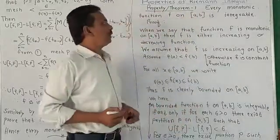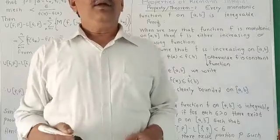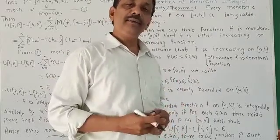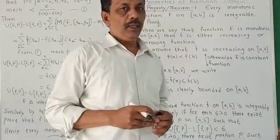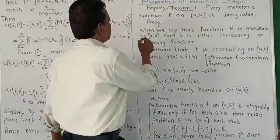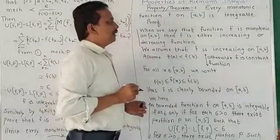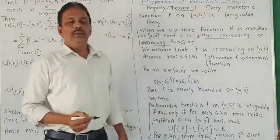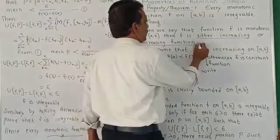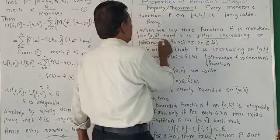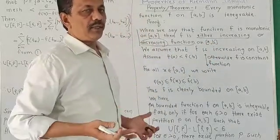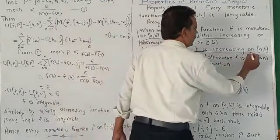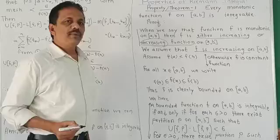First property: every monotonic function F on [a,b] is integrable. Monotonic function means the function which is either non-increasing or non-decreasing. When we say that function F is monotonic on [a,b], then F is either increasing or decreasing on [a,b]. Here we assume that F is an increasing function.